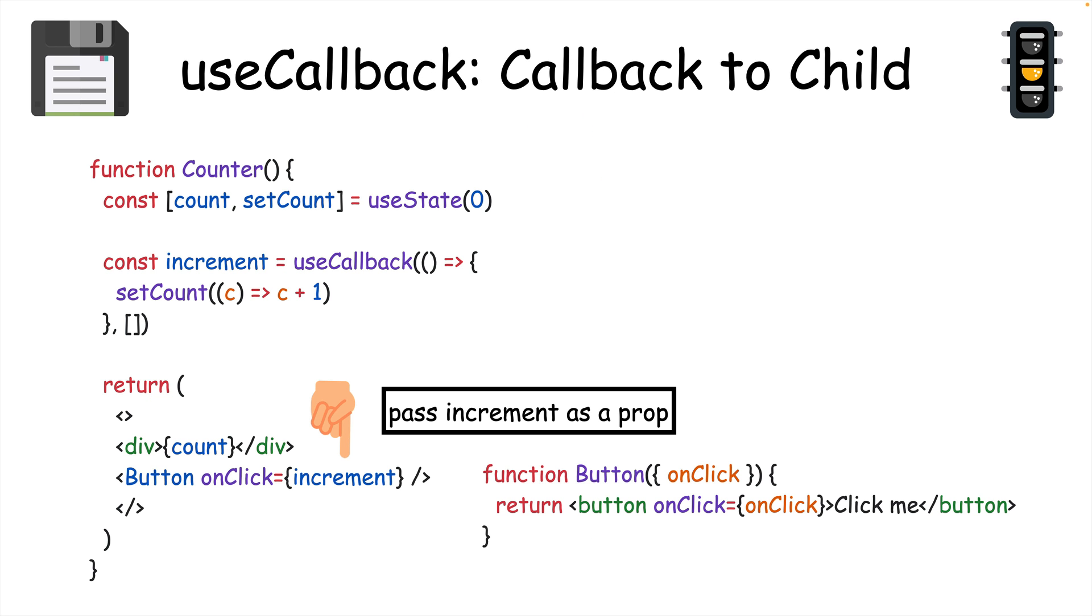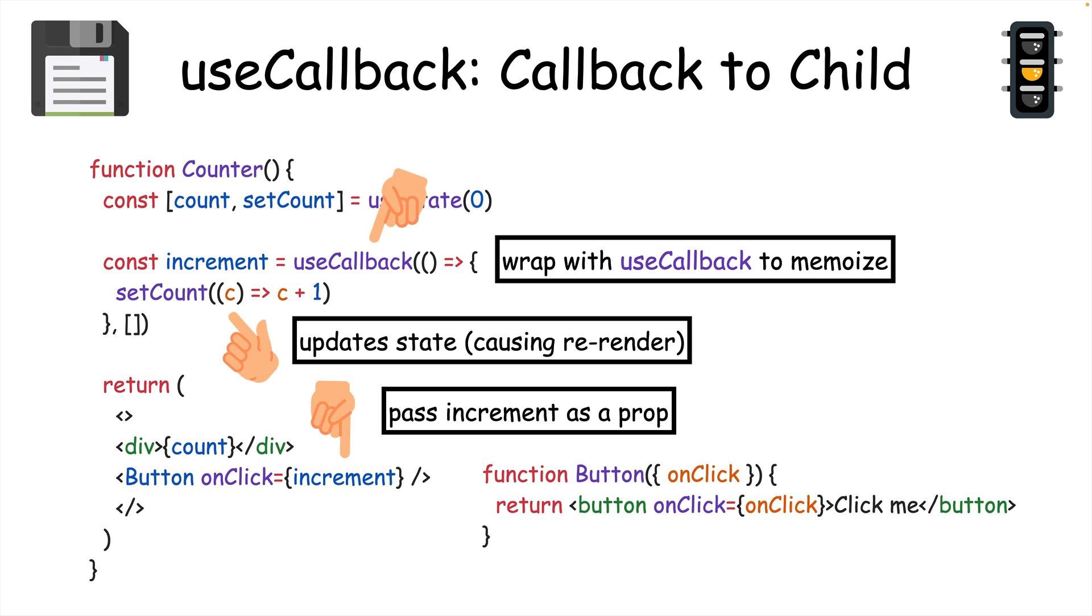In this example, we're passing the increment function as a prop to the button component. Since that function updates state, it'll cause a rerender whenever it's run. So to prevent the increment function from being recreated every time the component rerenders, we wrap the increment function in useCallback.